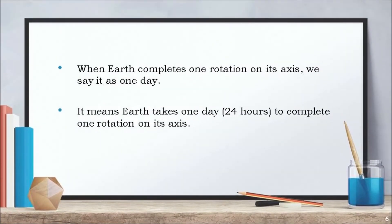When earth completes one rotation on its axis, we say that we have completed one day. It means earth takes one day, that is 24 hours, to complete one rotation on its axis.